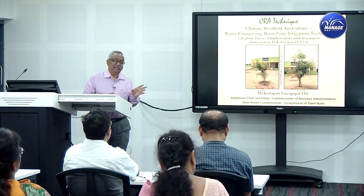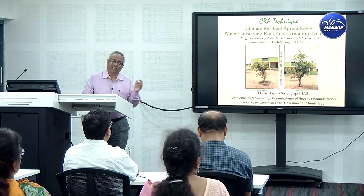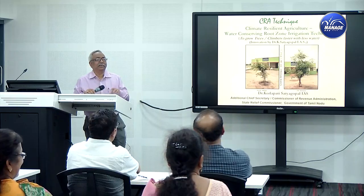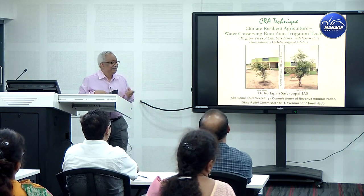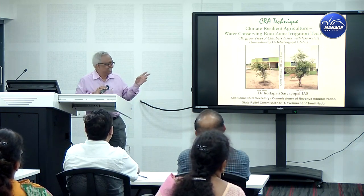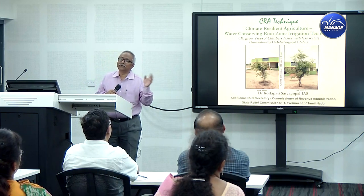This is the C.R.A. technique, popularly known in Tamil Nadu. It is not initially called climate resilient agriculture — it is named after me because I am the Commissioner Revenue Administration, and since I introduced this technique, people popularly call it the C.R.A. technique. We later gave it the expansion: Climate Resilient Agriculture and Water Conserving Root Zone Irrigation Technique.